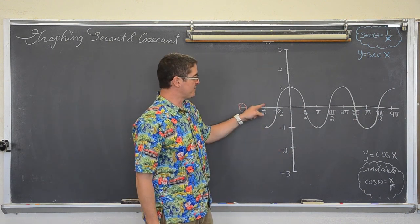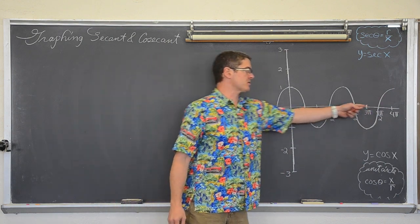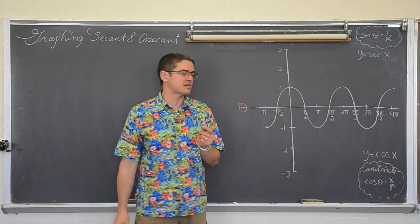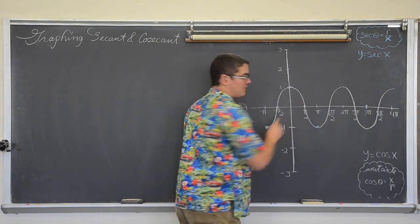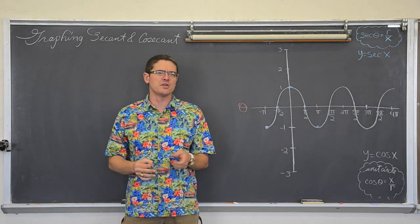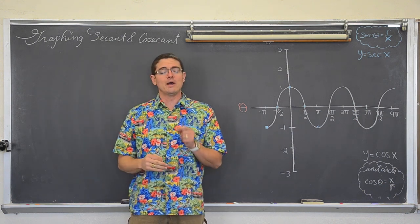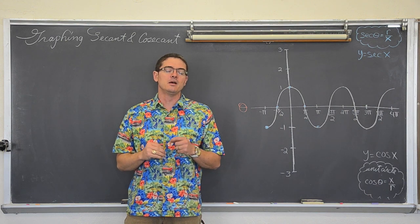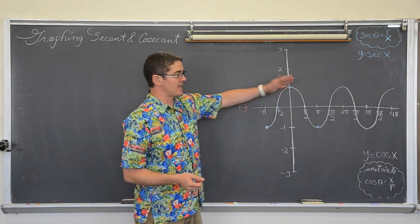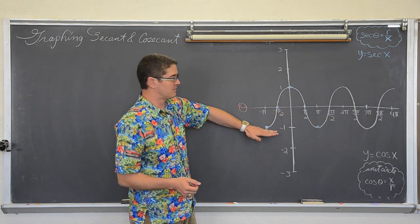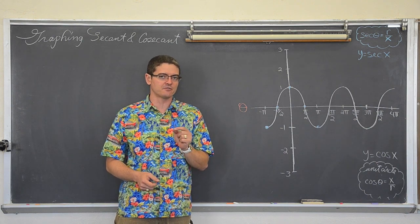Any place along the graph where the cosine function is zero is going to make the secant function undefined. If there is no vertical shift, that is going to be the x-intercepts, but a lot of these graphs will have vertical shifts. So don't think the vertical asymptotes are going to happen just where the graph crosses the x-axis. The vertical asymptotes don't happen at the min or max values, but at the middle points where the sine or cosine was zero before the vertical shift.